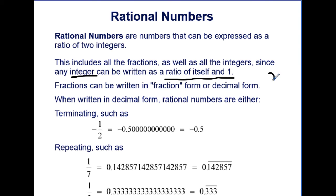Think of the integer 2. Well, 2 can be written as 2 over 1. Negative 5 can be written as negative 5 over 1. Even the integer zero can be 0 over 1.